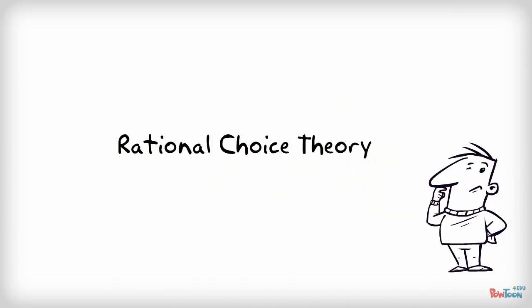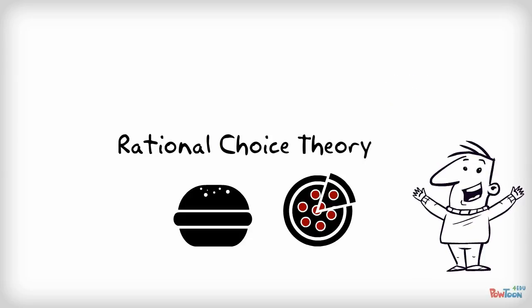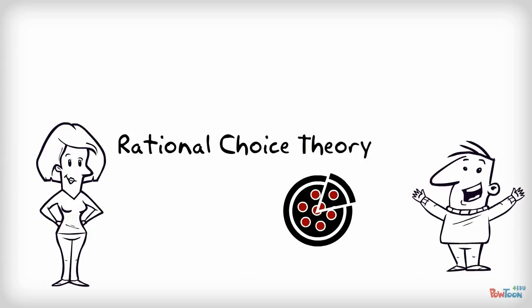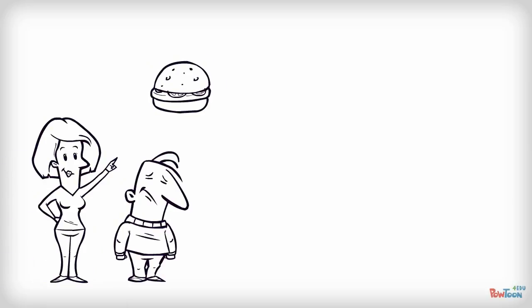According to rational choice theory, if I have a choice between going to a pizza parlor or a burger joint, I am going to weigh the possible options and make the most logical choice with the resources I have available. It looks like I'm having pizza. However, what rational choice theory does not take into account is the social pressure I'm going to receive from my wife to go to a burger joint, because my wife loves hamburgers.